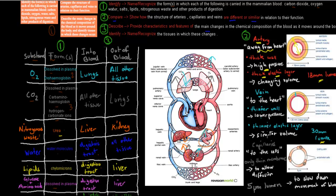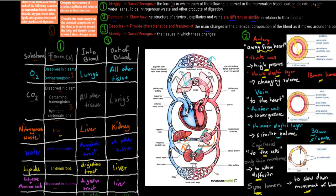Veins transport blood back to the heart. Their walls are thinner than arteries because they withstand less blood pressure, and the elastic layer is thinner since they don't need to change size. Because blood travels at lower pressure, veins need a larger lumen than arteries to transport sufficient blood. Capillaries move blood towards cells and have a very small lumen — about 5 micrometres — slowing the blood to allow more time for diffusion. They have only a very thin membrane with no cell walls, which allows diffusion of nutrients to cells.